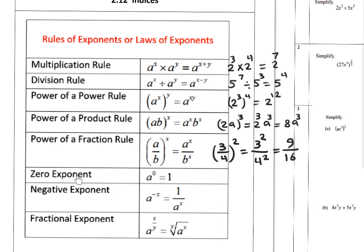Zero exponent rule: any number raised to the power 0 equals 1. So a^0 equals 1, b^0 equals 1, and n^0 equals 1.